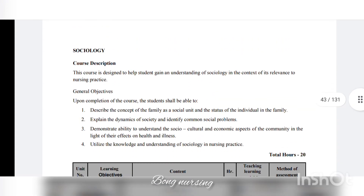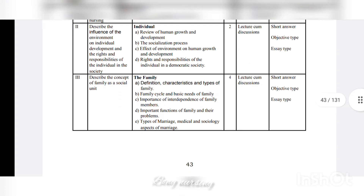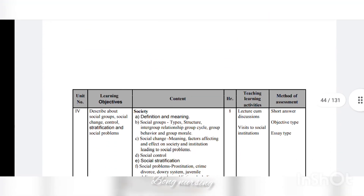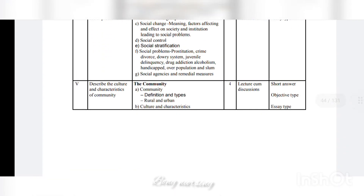Sociology: this course is designed to help the student gain an understanding of sociology and its relevance to nursing patients. Unit one covers the introduction to sociology: definition, scope, and interpersonal relationships. Unit two covers the individual and family: definition, functions, and types of marriage. Unit three covers society: definition, meaning, social groups, social change, and social control. Unit four covers community: definition, types, culture, and characteristics.